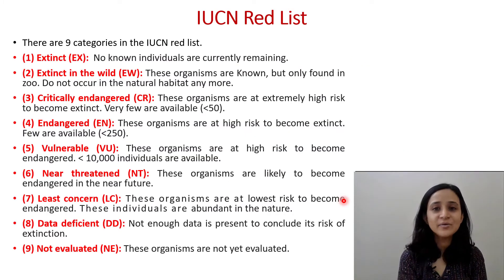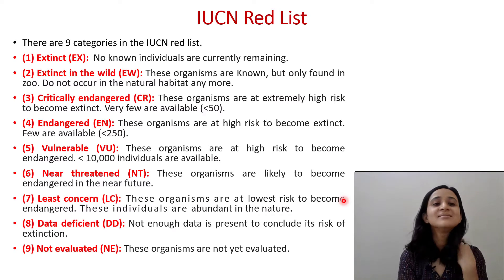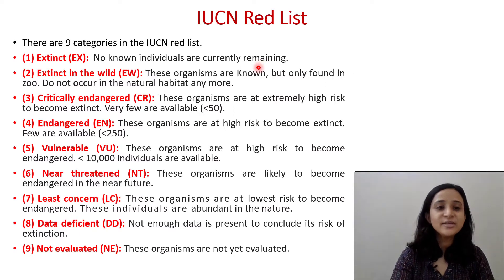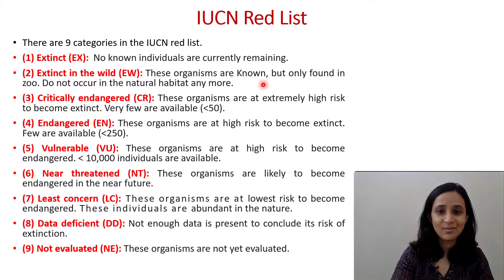There are nine categories in the IUCN Red List. The first category is Extinct (EX) — no known individuals are currently remaining. The second category is Extinct in the Wild (EW) — these organisms are known but only found in zoos; they do not occur in their natural habitat anymore.